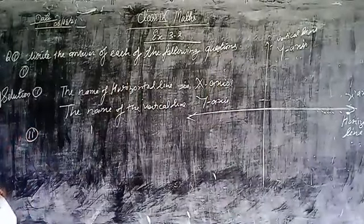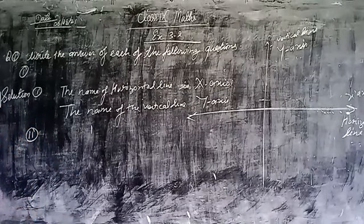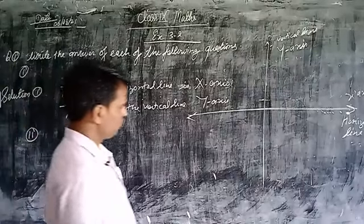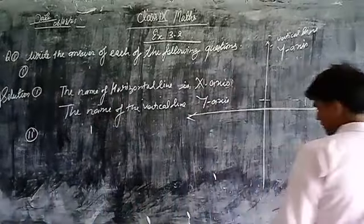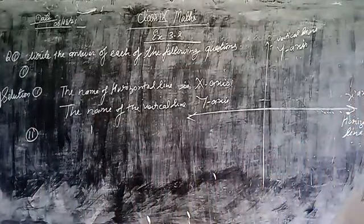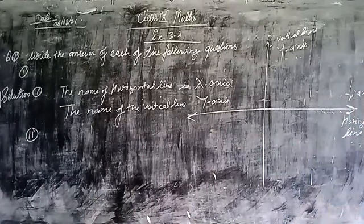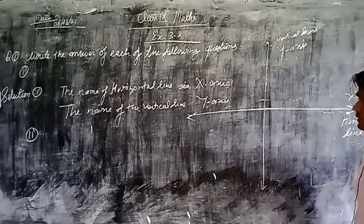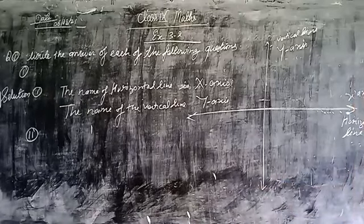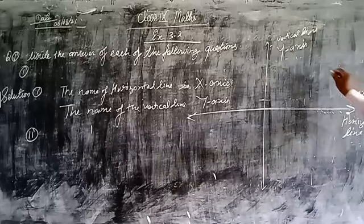In question number two: what is the name of each part of the plane formed by these two lines? When we draw two perpendicular lines in a plane, the plane is divided into four equal parts, and each part is called a quadrant.